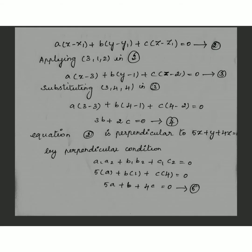Now, equation 2 is perpendicular to the given plane, so we use the perpendicularity condition: a1·a2 + b1·b2 + c1·c2 = 0. Here, a1, b1, c1 and a2, b2, c2 are the normals of the two planes. From equation 2, the normal is (a, b, c), and from the given plane 5x + y + 4z = 0, the normal is (5, 1, 4). Substituting, we get equation 5.